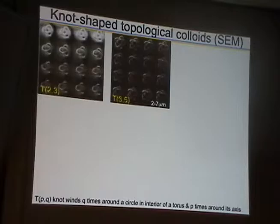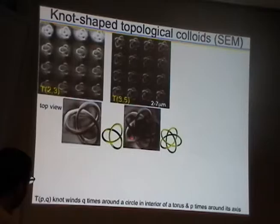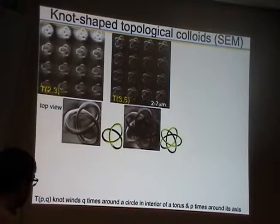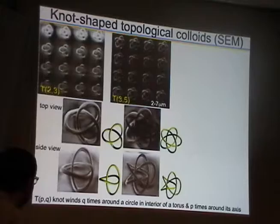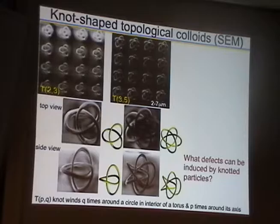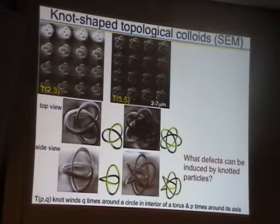By means of two-photon polymerization, we can fabricate particles with the shapes of trefoil and pentafoil knots. SEM images from different sides confirm that there are no connections between strands — they really have the topology of different knots. The question is what types of topological defects we can generate by introducing those types of colloidal particles into liquid crystals.